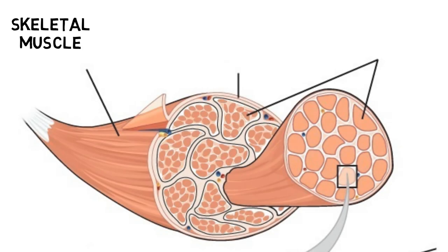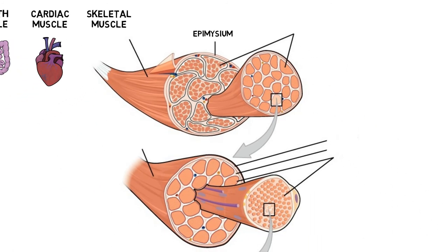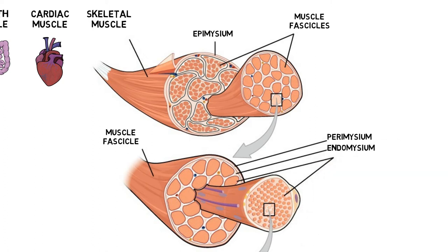The structure of skeletal muscle can appear complex at first, but it is worth learning. The epimysium is the connective tissue that surrounds the muscle belly. Fascicles are bundles of muscle cells segregated from the rest of the muscle by a connective tissue sheath. The perimysium is the connective tissue that surrounds the fascicles. The endomysium is the connective tissue that surrounds the muscle fibres.